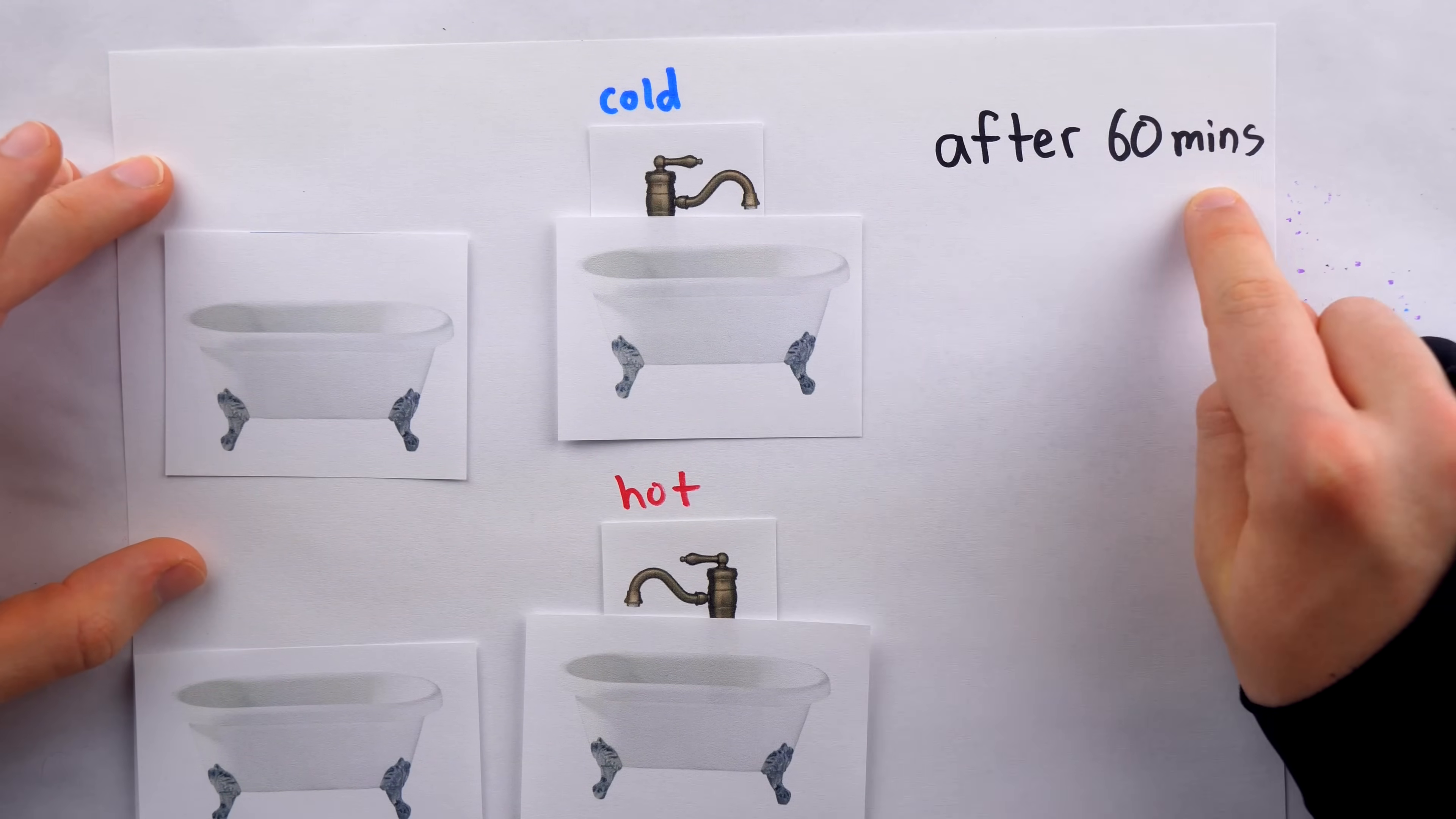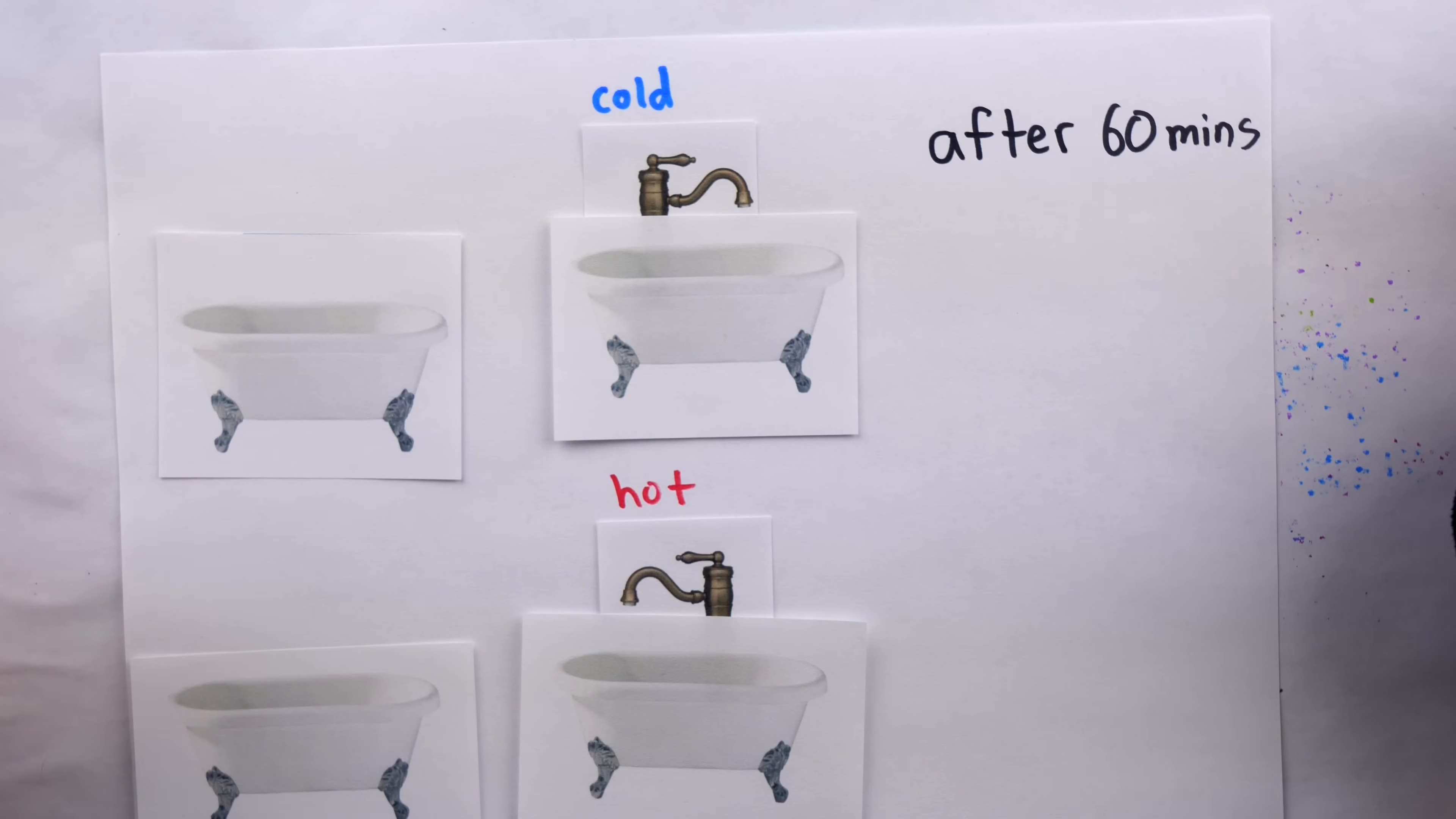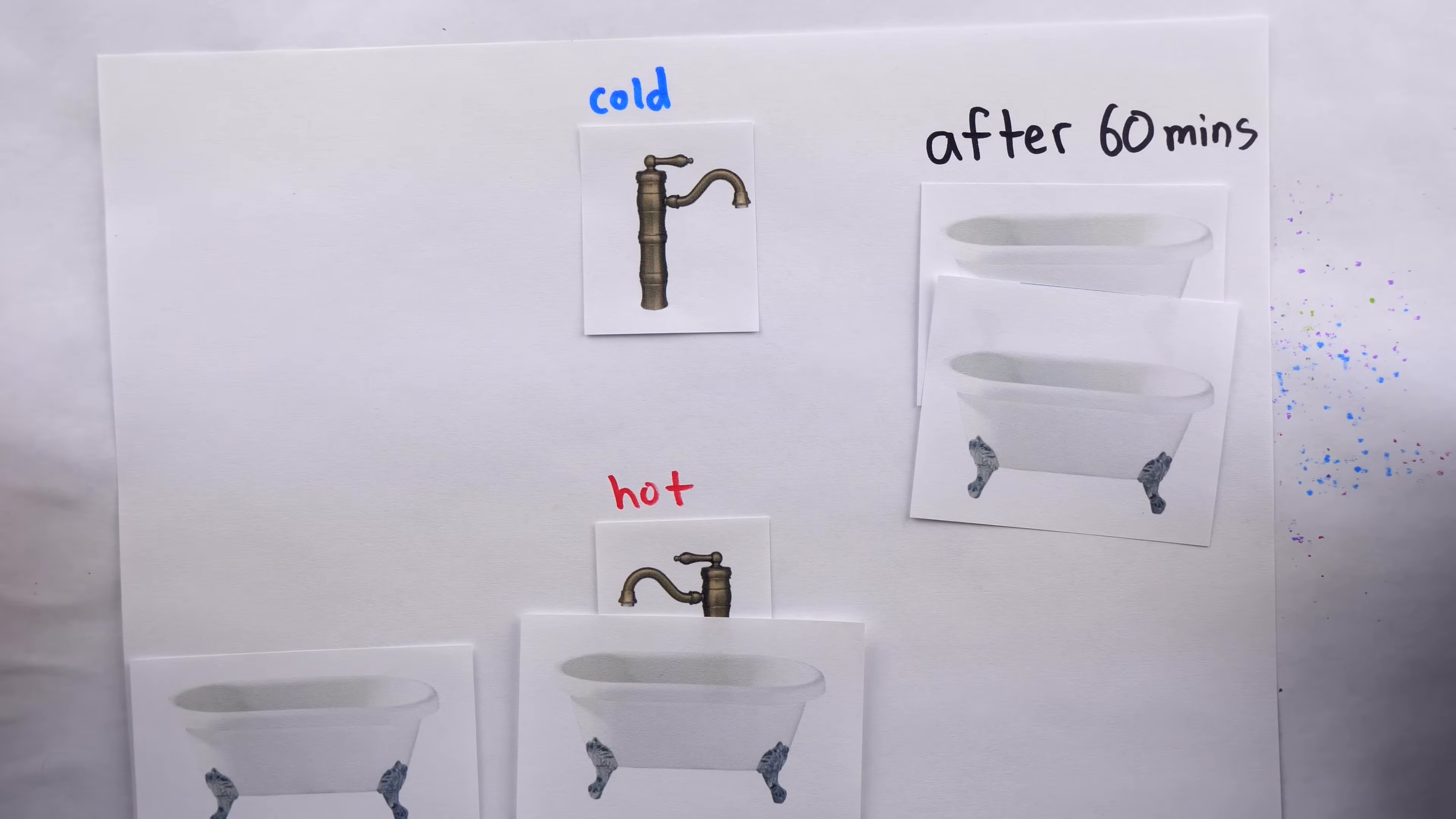So we're looking at how many tubs the cold and the hot water faucets can fill up when running together in 60 minutes, but we're not requiring them to flow into the same tub, which is part of what causes some confusion with the problem. Well after 60 minutes, the cold water on its own, we know, could fill up two tubs, because it fills up one tub every 30 minutes.